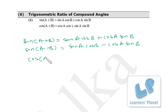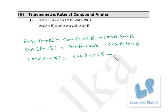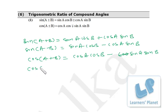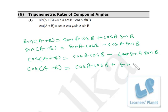Similarly, cos(A+B) = cos A cos B − sin A sin B — if it is plus over here, it will be minus over here. And cos(A−B) = cos A cos B + sin A sin B.